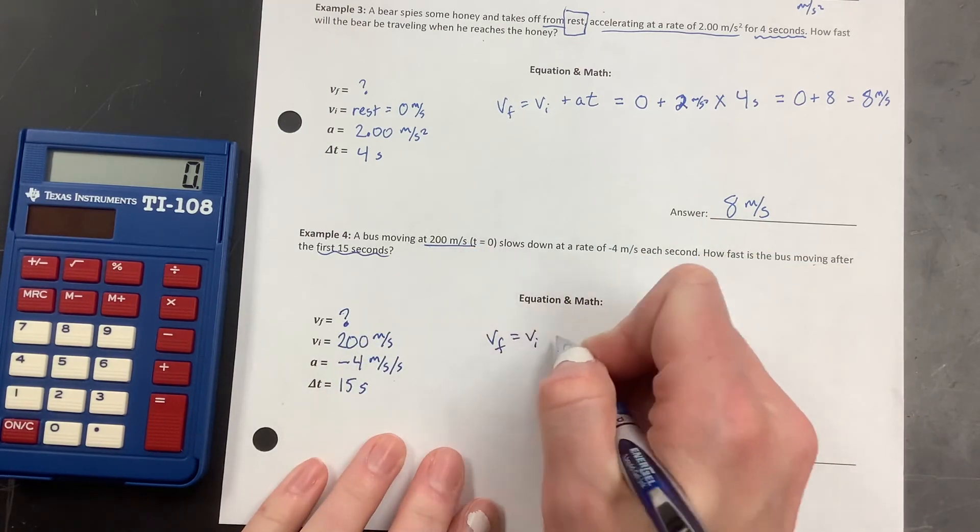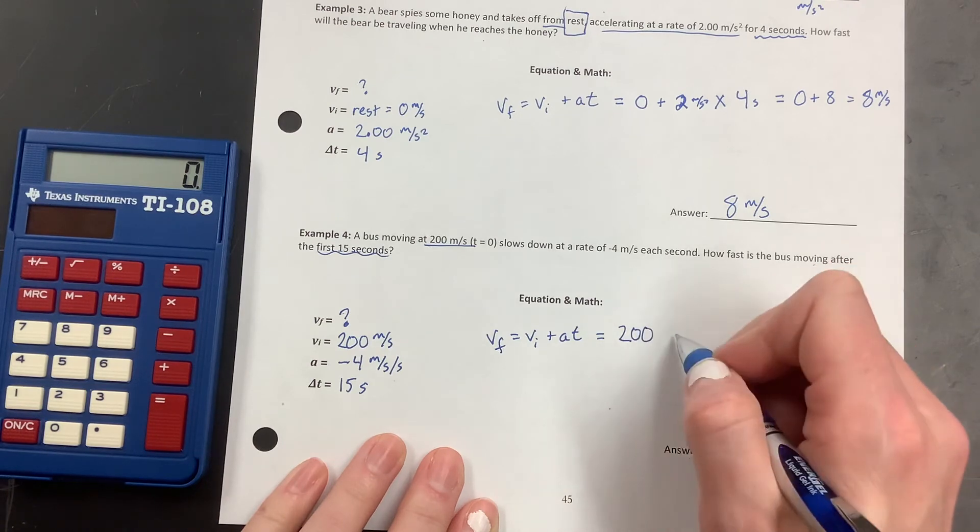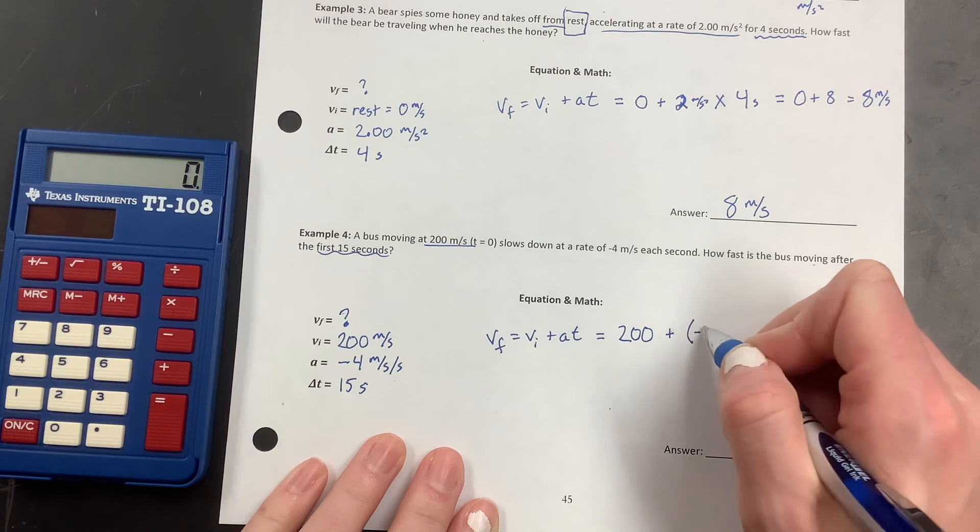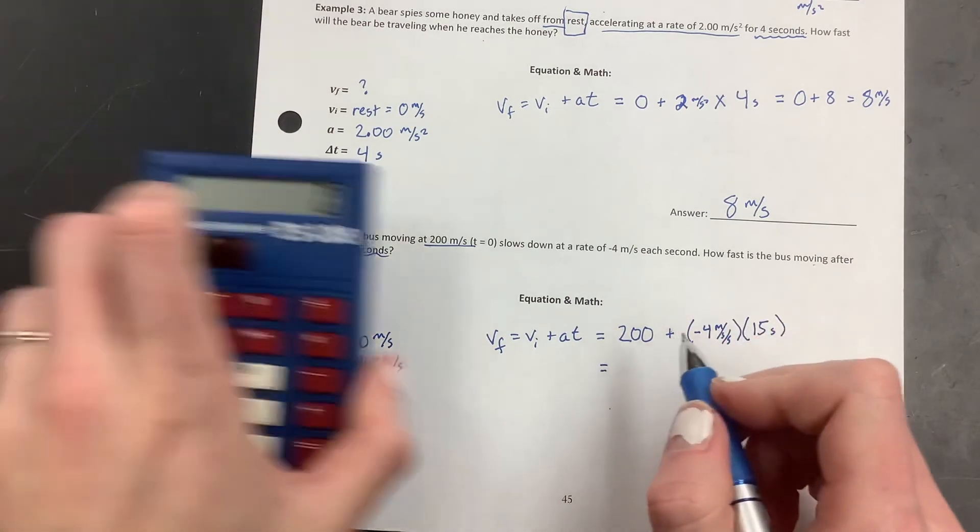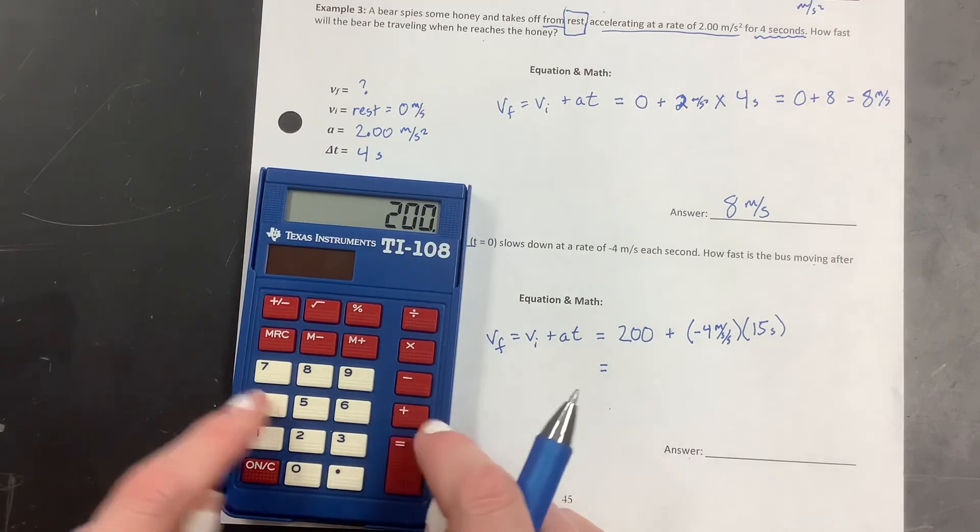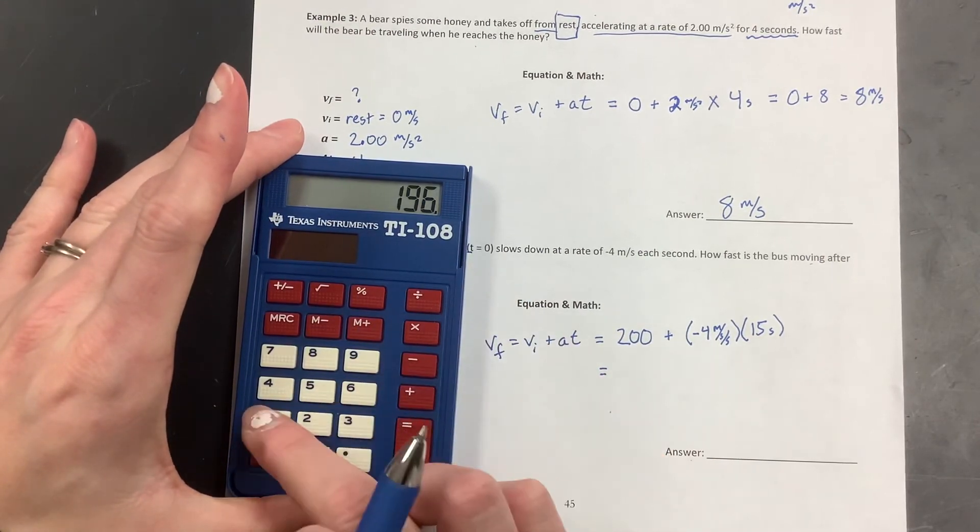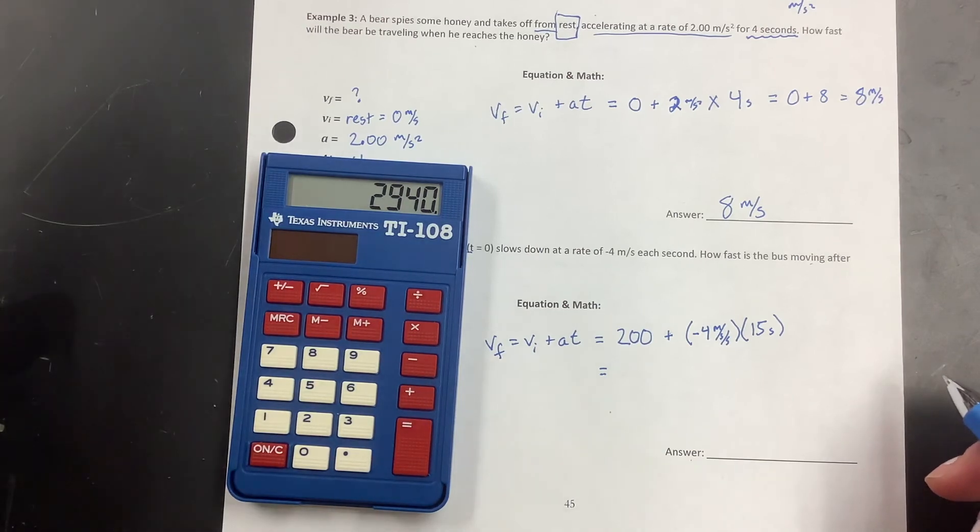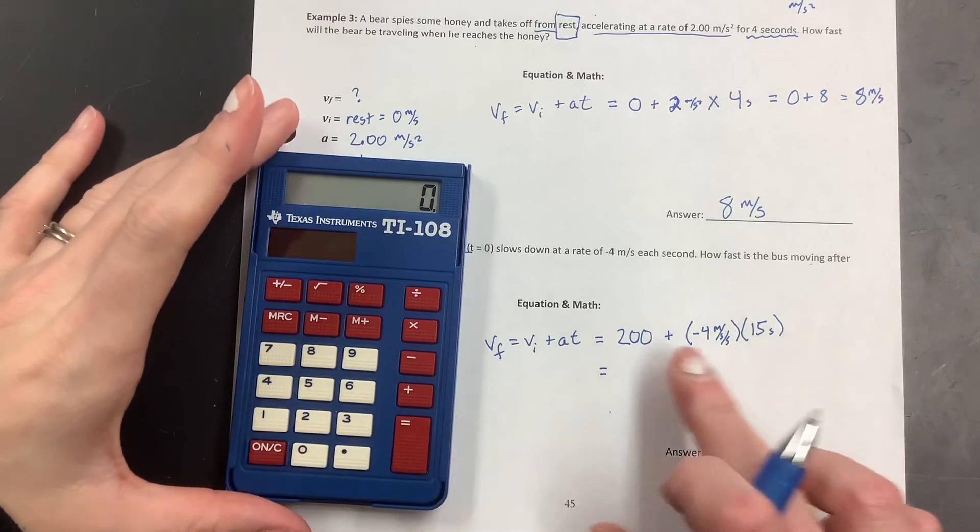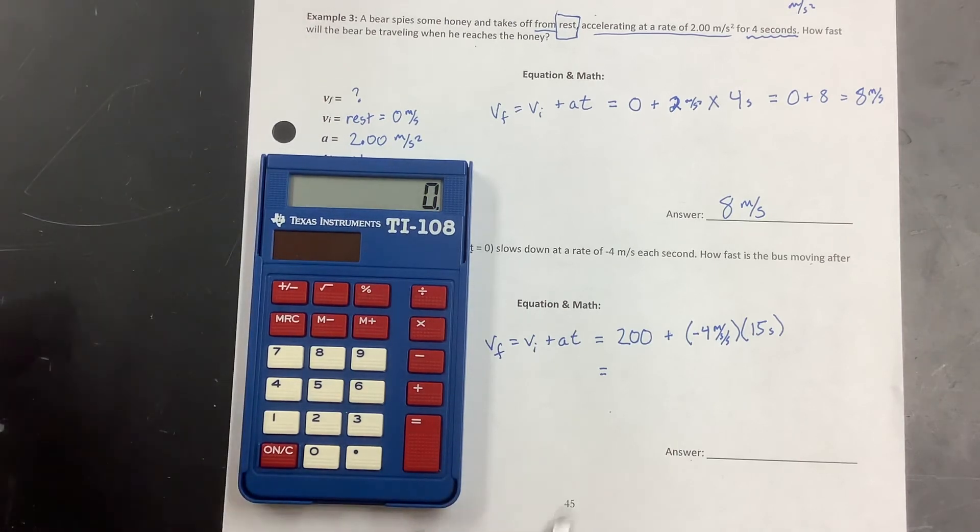VF equals VI plus AT. So this time I have a VI, so that's going to be 200 plus, and then I have, I'm going to put it in parentheses, negative 4 meters per second per second and 15 seconds. So if I'm going to plug this into my calculator and I go 200 plus 4, whoops, hang on. This one has a negative button, doesn't it? 200 plus 4, negative, times 15. So I got 2,940. Does that make sense? That doesn't make any sense, actually. Equals. No, that's just getting bigger. So I need to do bits and pieces here. And let me show you on this calculator. So if I do 200 plus negative 4 times 15, this one's actually going to give me the right answer because it's a little bit smarter than a four-function calculator. But this is what we're using here.